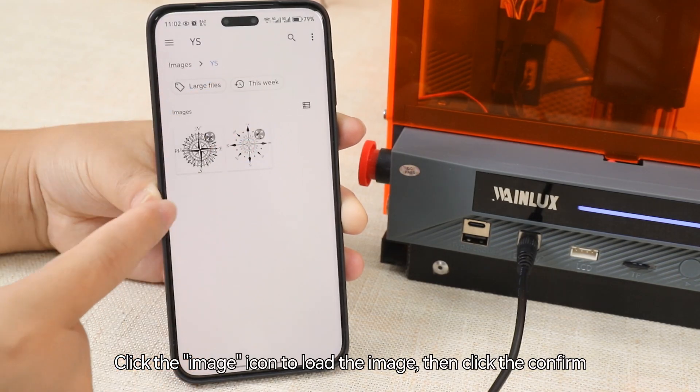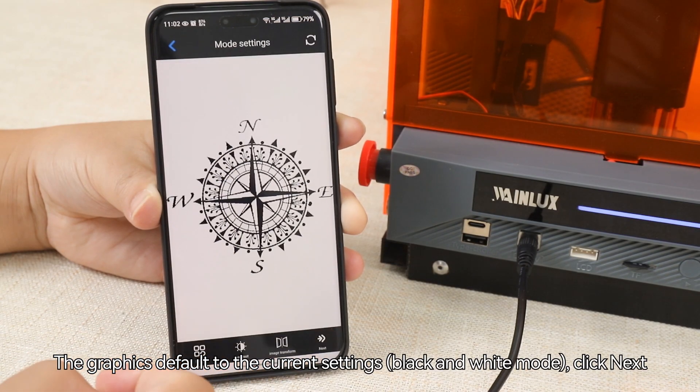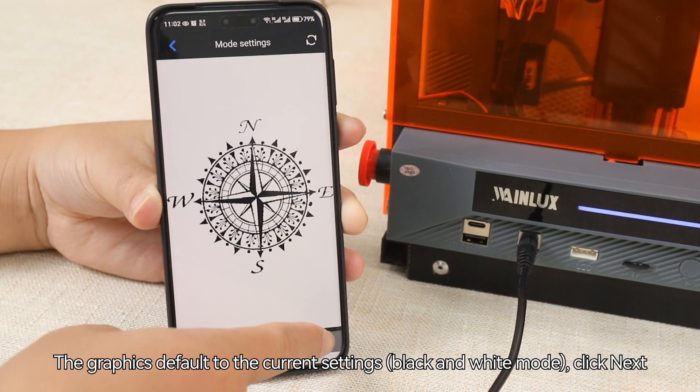Click the image icon to load the image, then click confirm. The graphics default to the current settings in black and white mode. Click next.